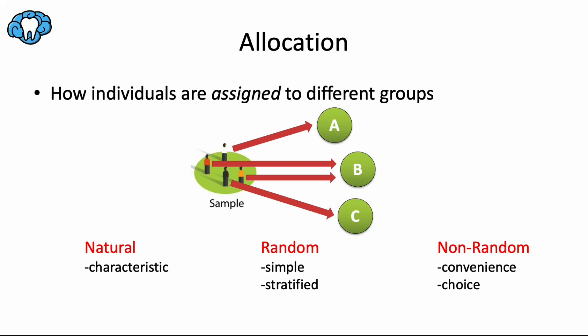Next is allocation. Allocation is how individuals are assigned to different groups, either treatment groups, control group, placebo group, and so on. So we have a couple options for this as well. Natural assignment means that the group allocation is based on characteristics not under investigator control, like health status, disease diagnosis, age, etc. Natural characteristics are what are responsible for allocating people into different groups.